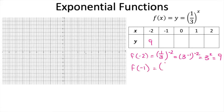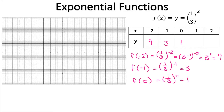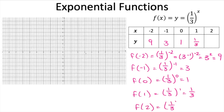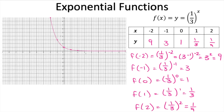f of negative 1 gives 1 over 3 to the power of negative 1, which is just 3. f of 0 gives us 1, f of 1 gives us one third, and f of 2 gives us 1 over 9. Let's plot these points at x equals negative 2, negative 1, 0, 1, and 2, then connect the dots.